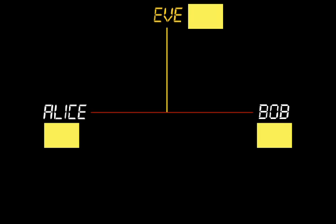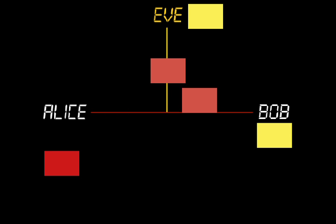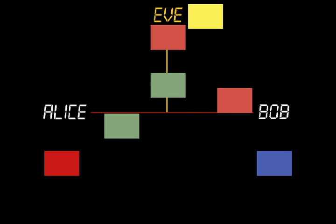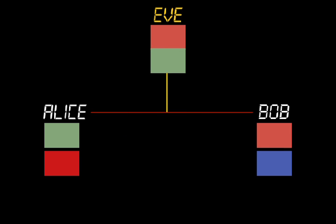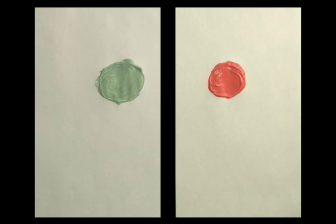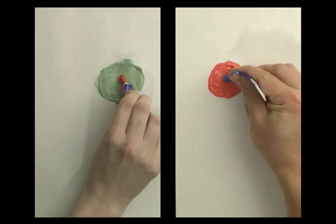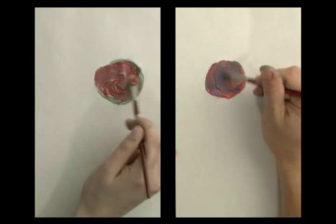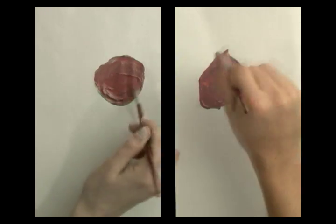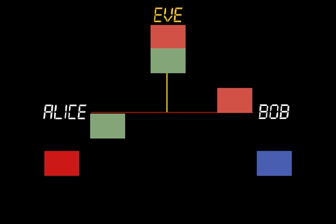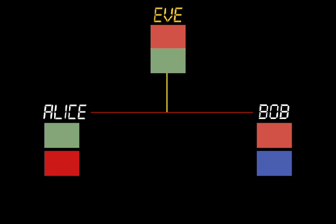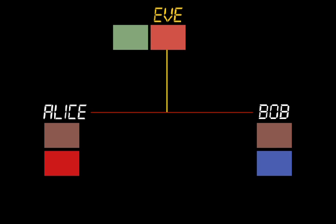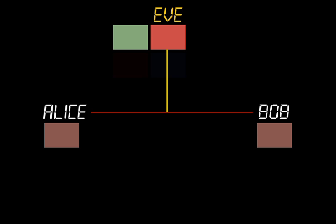Now Alice keeps her private color and sends her mixture to Bob. And Bob keeps his private color and sends his mixture to Alice. Now the heart of the trick. Alice and Bob add their private colors to the other person's mixture and arrive at a shared secret color. Notice how Eve is unable to determine this color, since she needs one of the private colors to do so. And that's the trick.